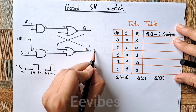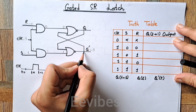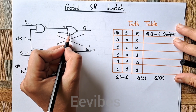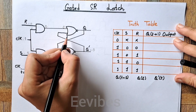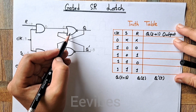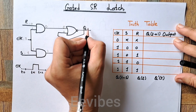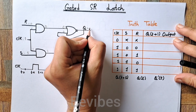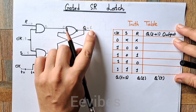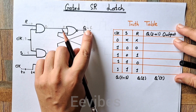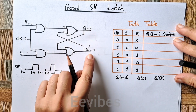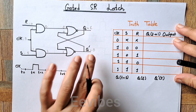Since one input of the lower NOR gate is equal to one, it forces Q-complement to be equal to zero. This output is fed back to the input of the upper NOR gate, making that input zero. Now all inputs of the upper NOR gate are zero, which drives it to produce output equal to one. So Q is set to one and Q-complement is equal to zero.